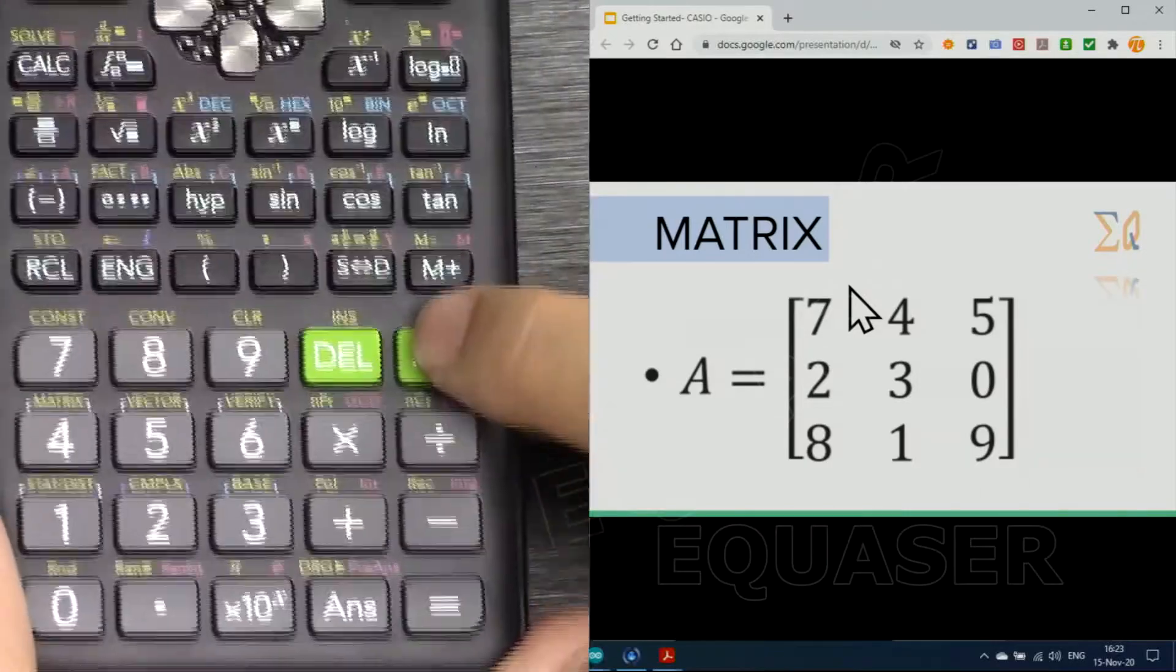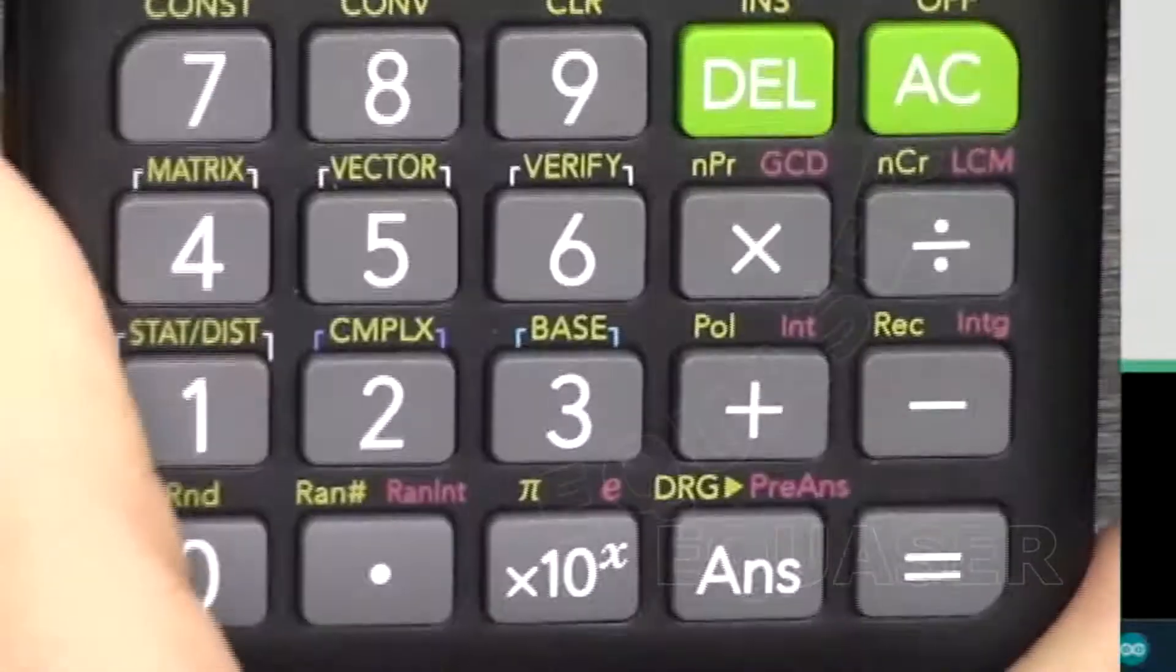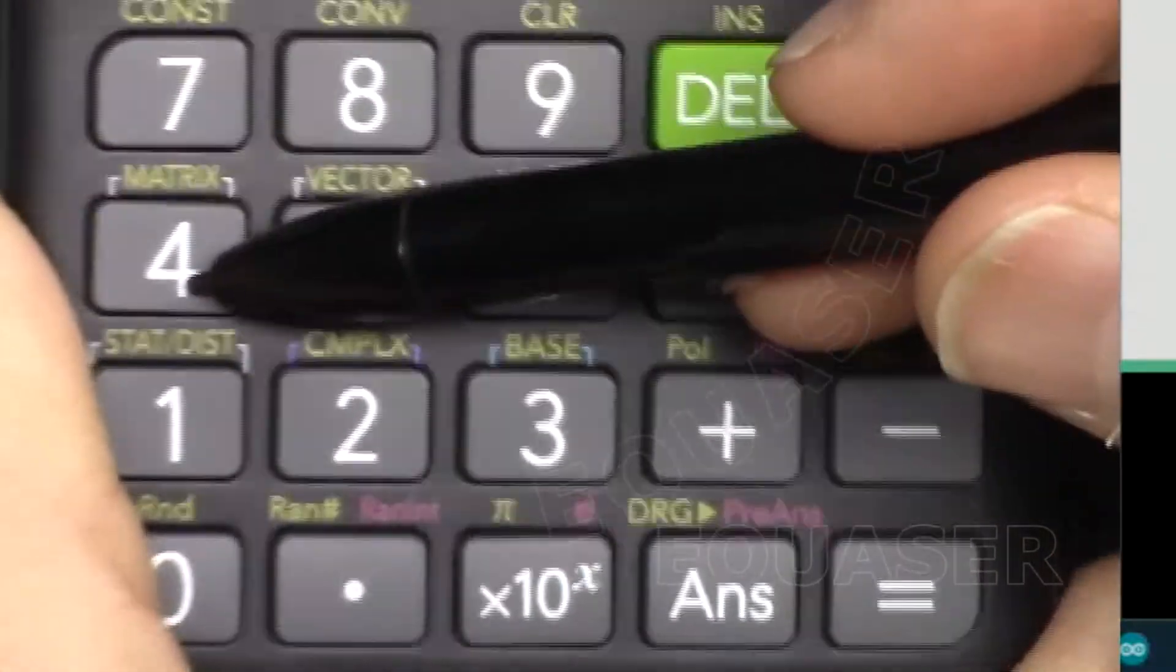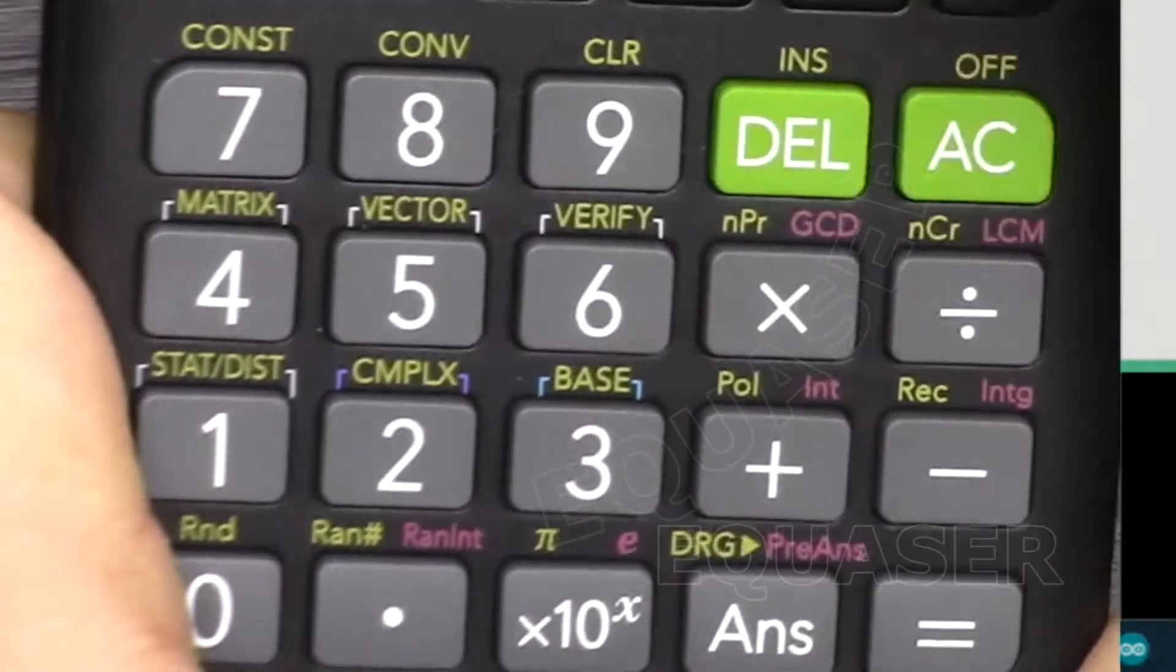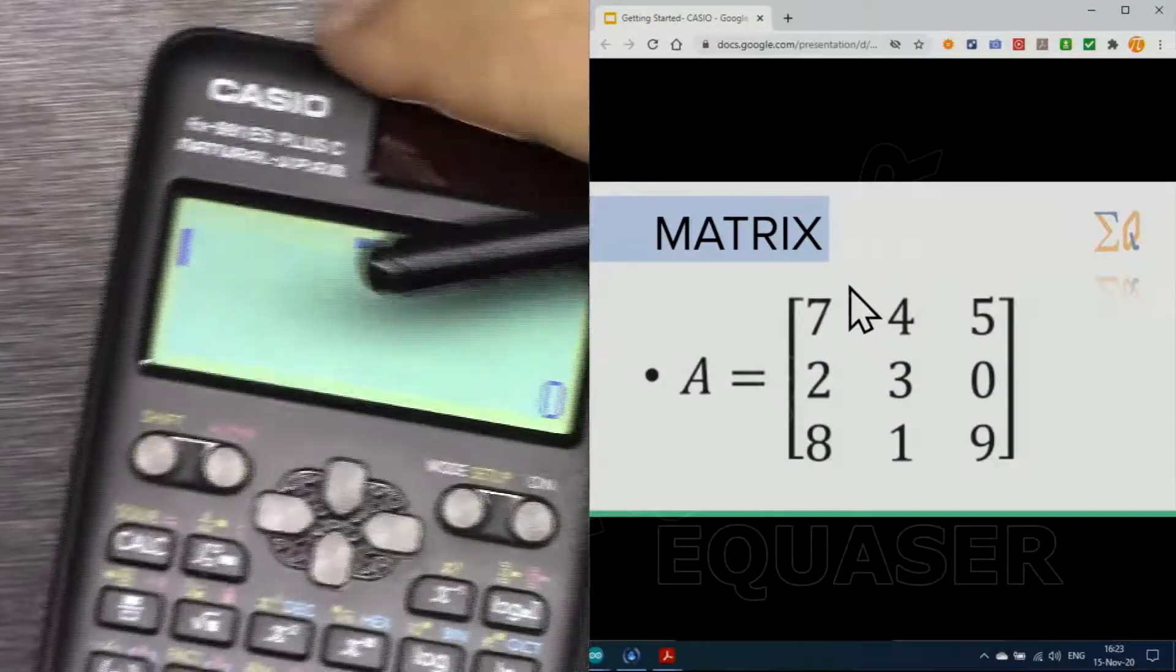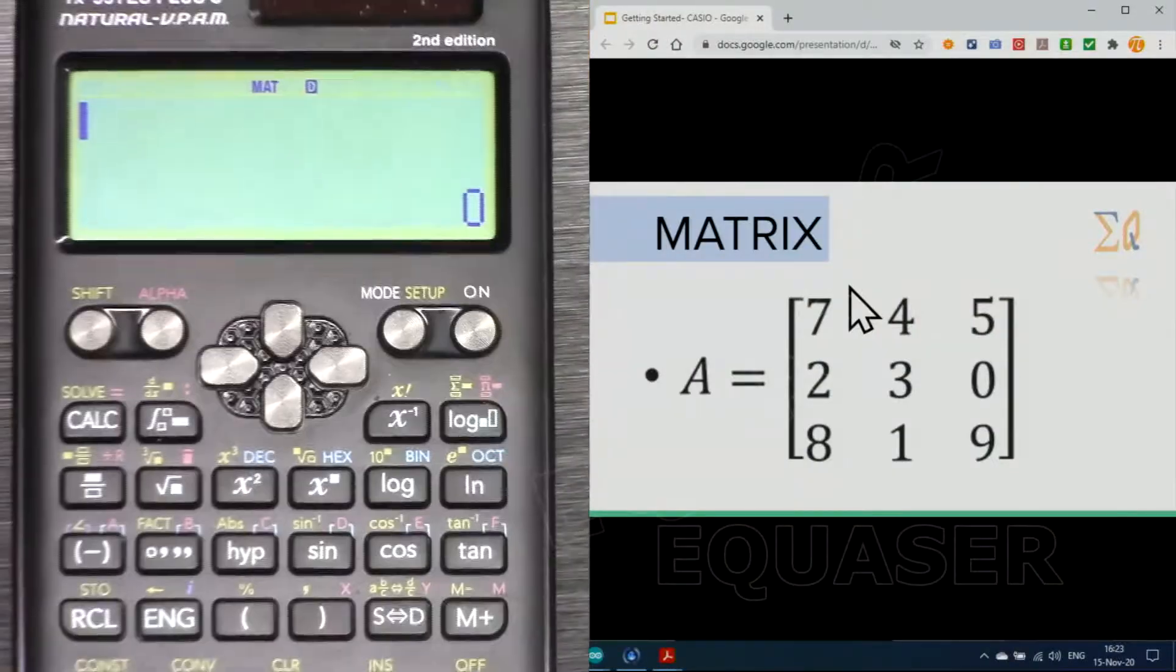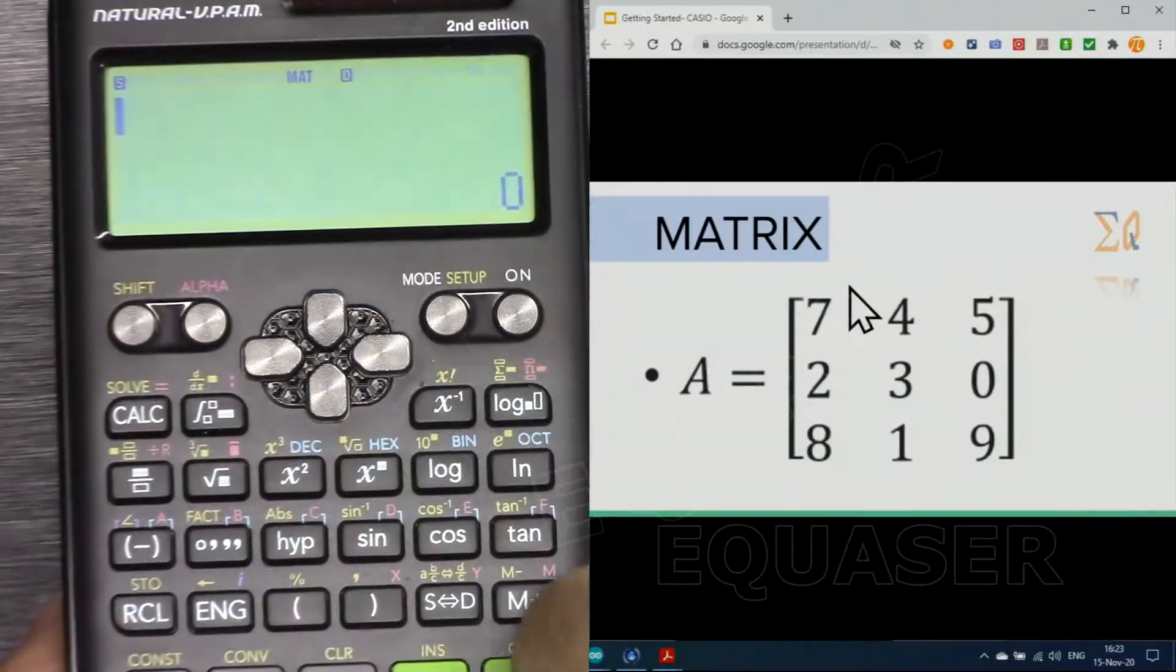This screen might disappear. I'm purposely making it disappear by pressing all clear. We have a button here for matrix which you can press with shift. I'm pressing shift and this 4 so we can go to matrix options.